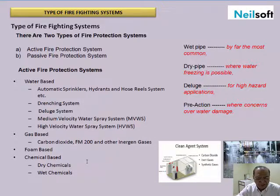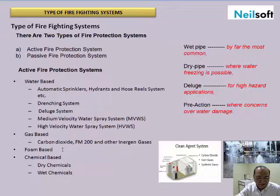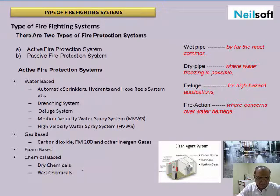Gas-based fire protection systems are generally carbon dioxide, FM-200, and other inert gases. Foam-based systems are used for flammable liquids like diesel and petrol. Chemical-based systems are applied with dry chemicals and wet chemicals for different kinds of hazardous materials.